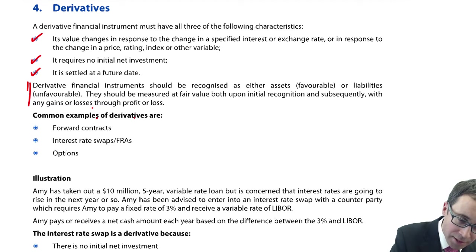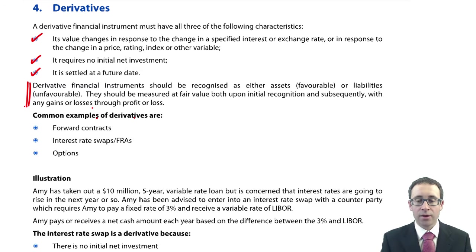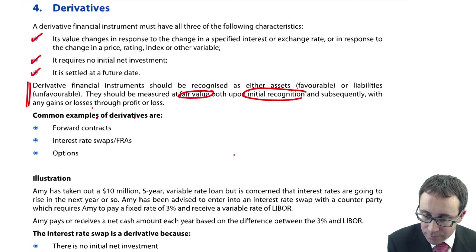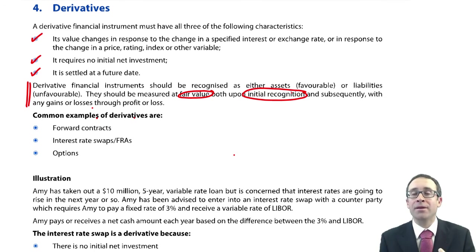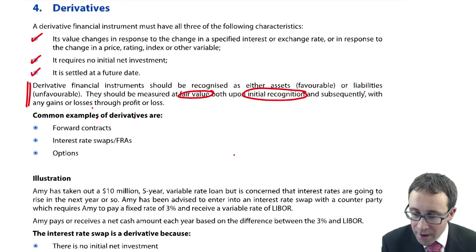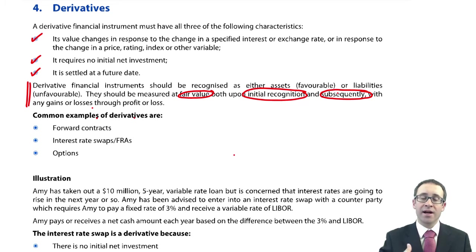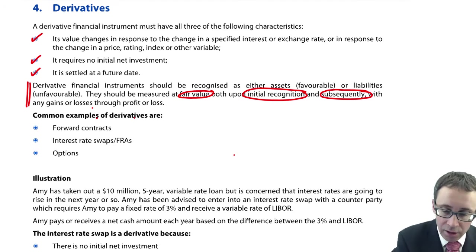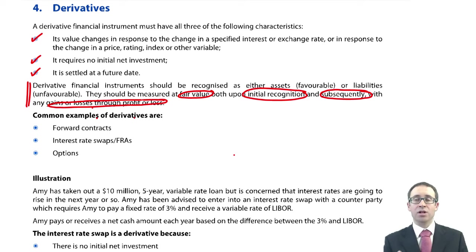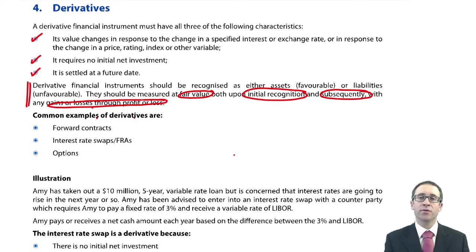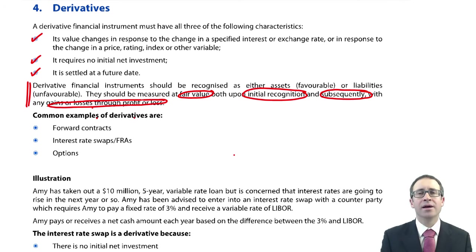In terms of the accounting, everything is based upon fair value. You measure the derivative at fair value initially — normally it's zero because you pay nothing, but if you do make a payment there will be some small value to it. You debit the derivative and credit the bank. Subsequently, as the value of the underlying item changes, the value of your derivative changes — it will either be favourable if it's a gain or unfavourable if it's a loss. Gains and losses are recognised immediately through profit or loss because the derivative is effectively speculative — it's held for trading purposes.